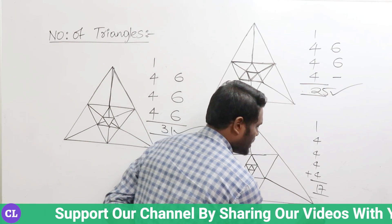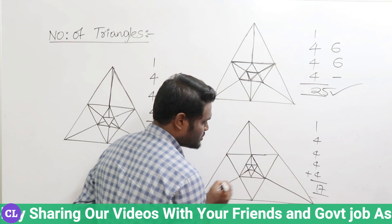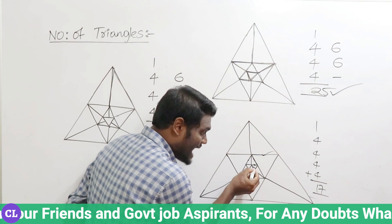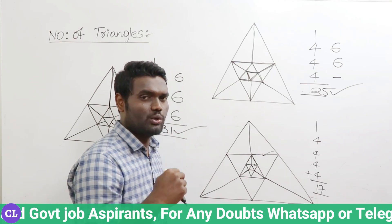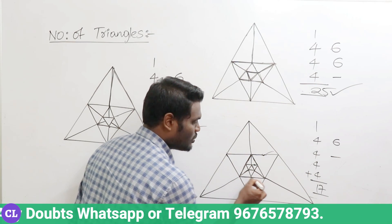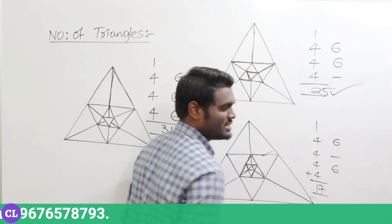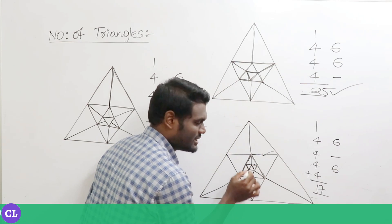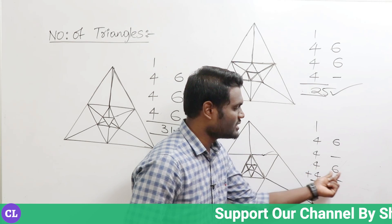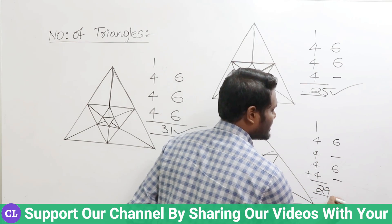Now I modify the figure with extensions done alternately. For this outermost triangle there is an extension so write six; for this next one there is no extension; for the inner one there is extension so write six again; and for the innermost one there is no extension. So only these two fours have six each. Total: this set is ten, this set is ten, giving twenty; plus four plus four plus one equals nine — so twenty-nine triangles in this figure.